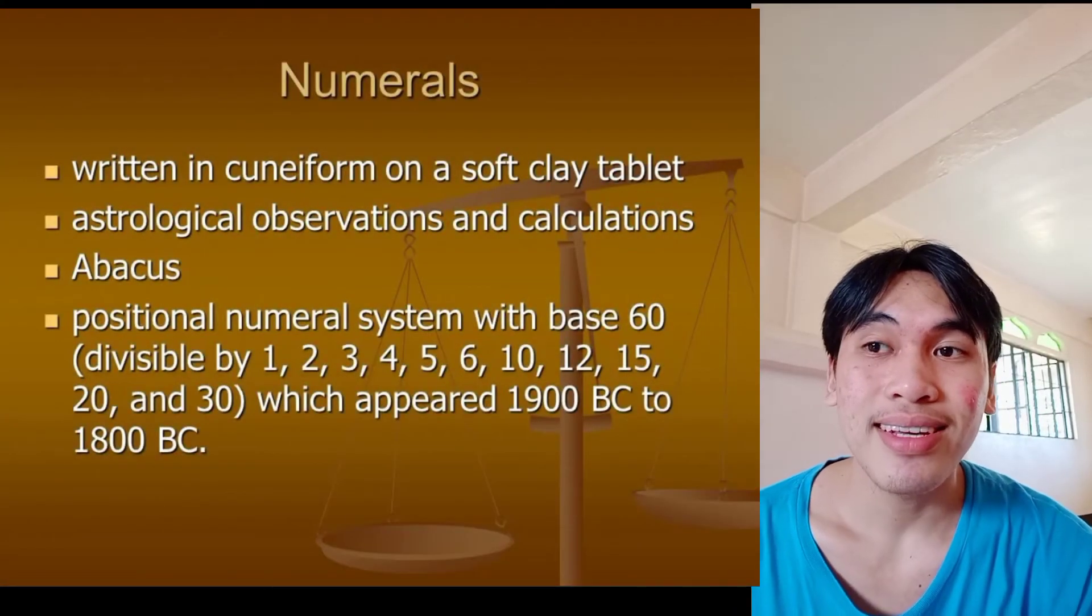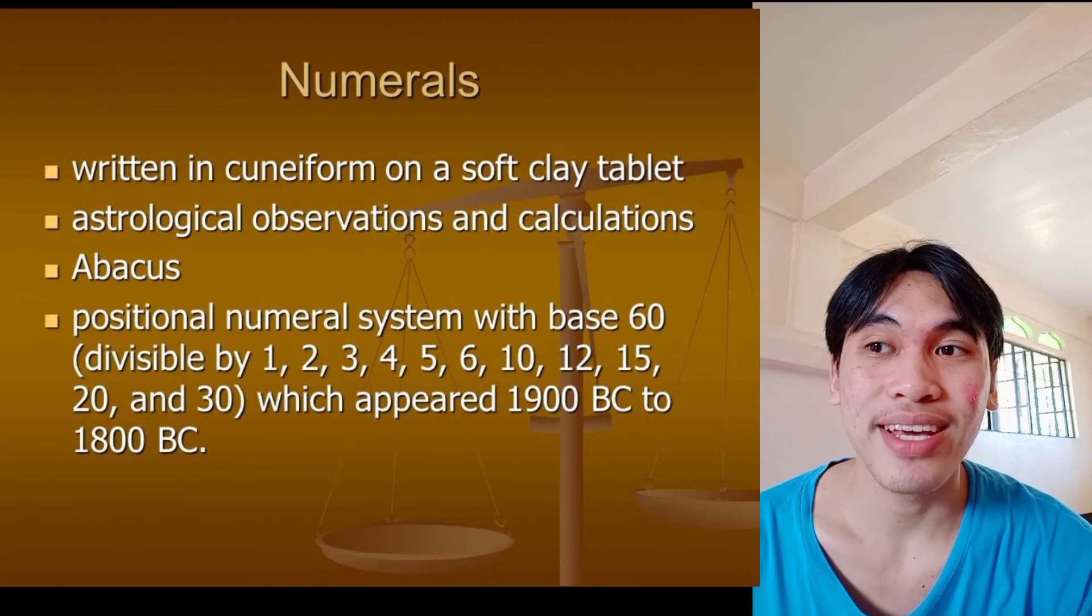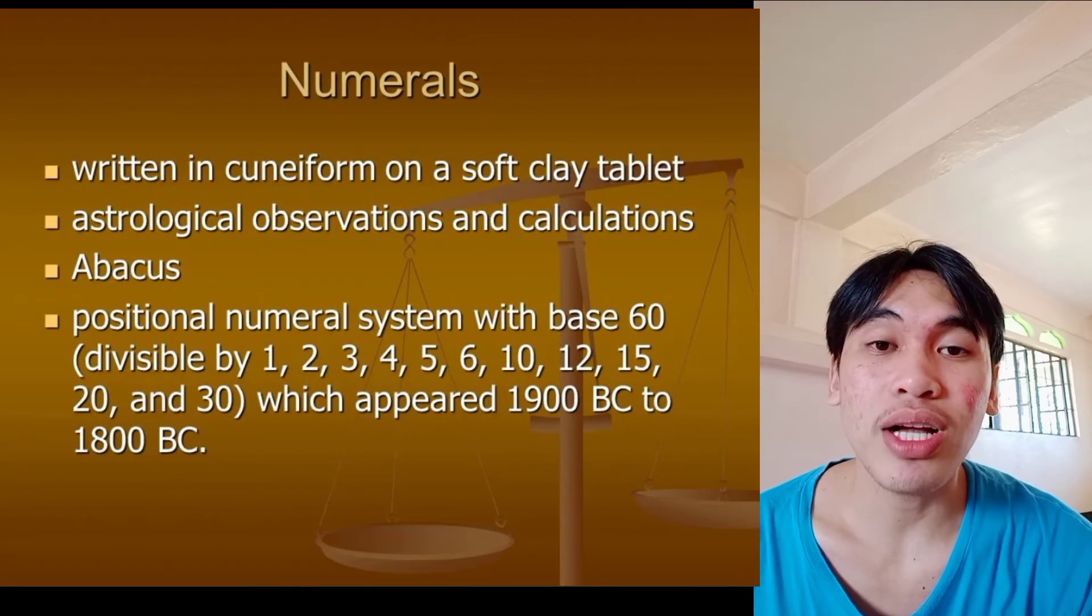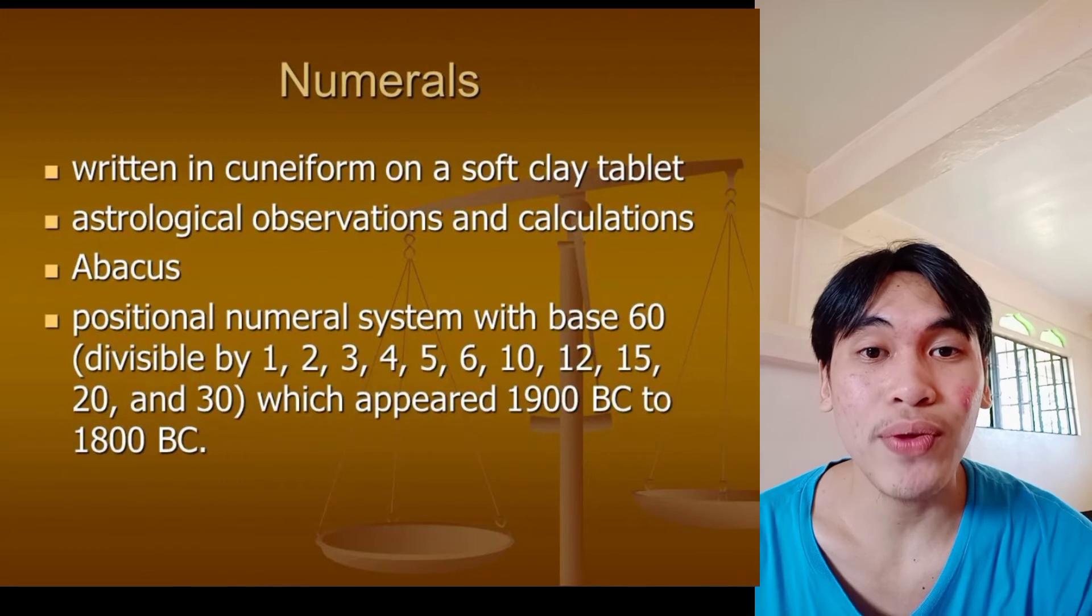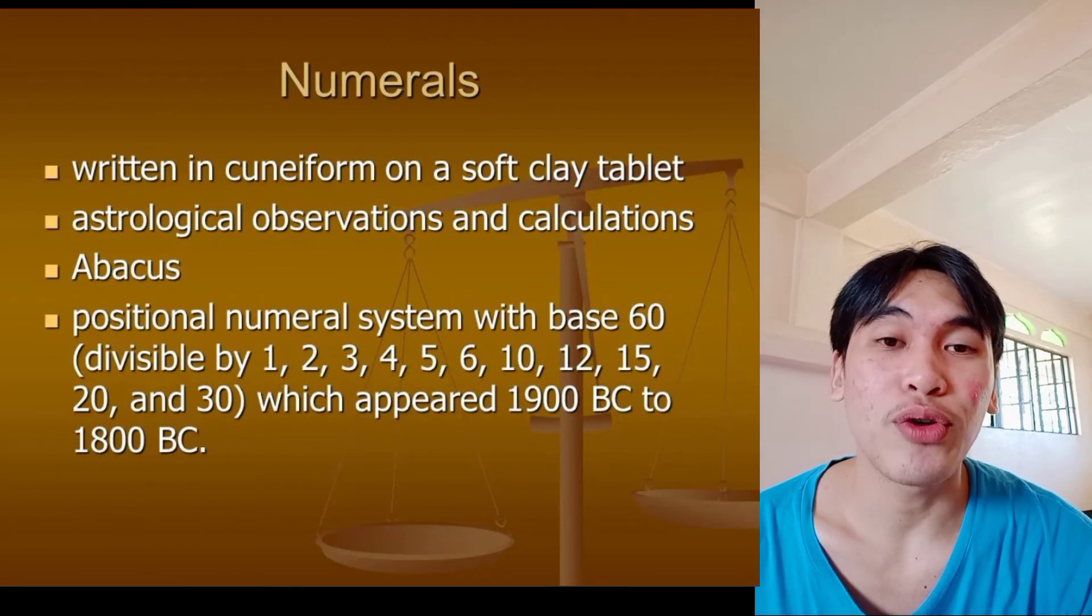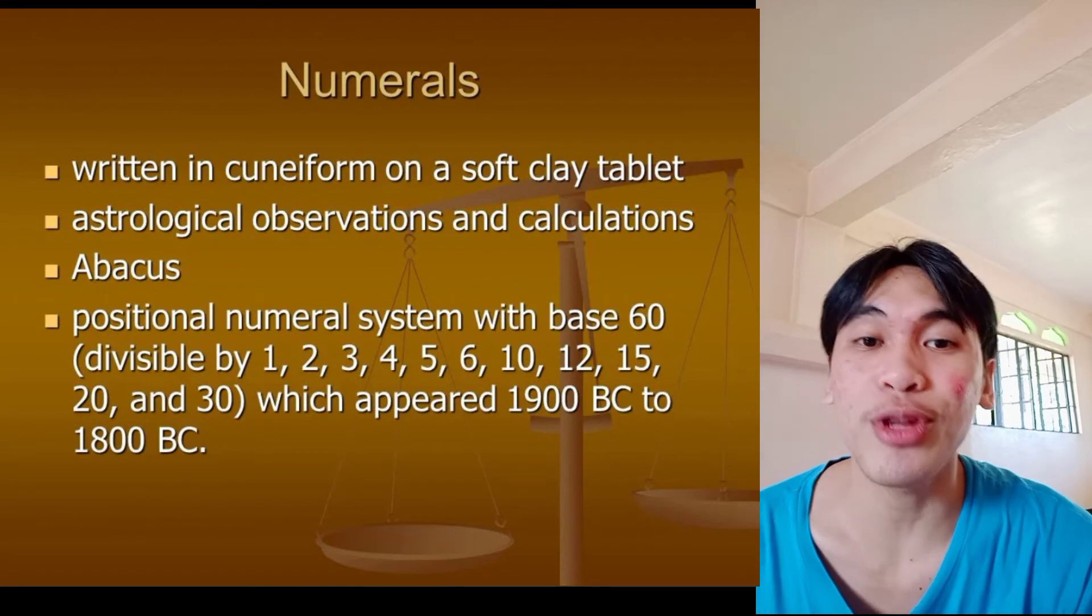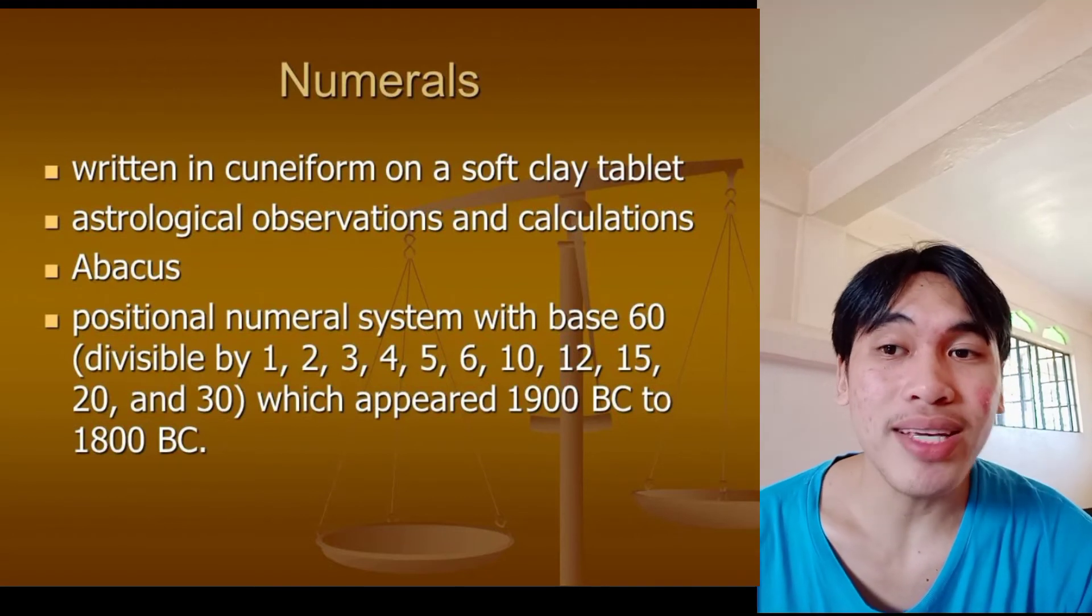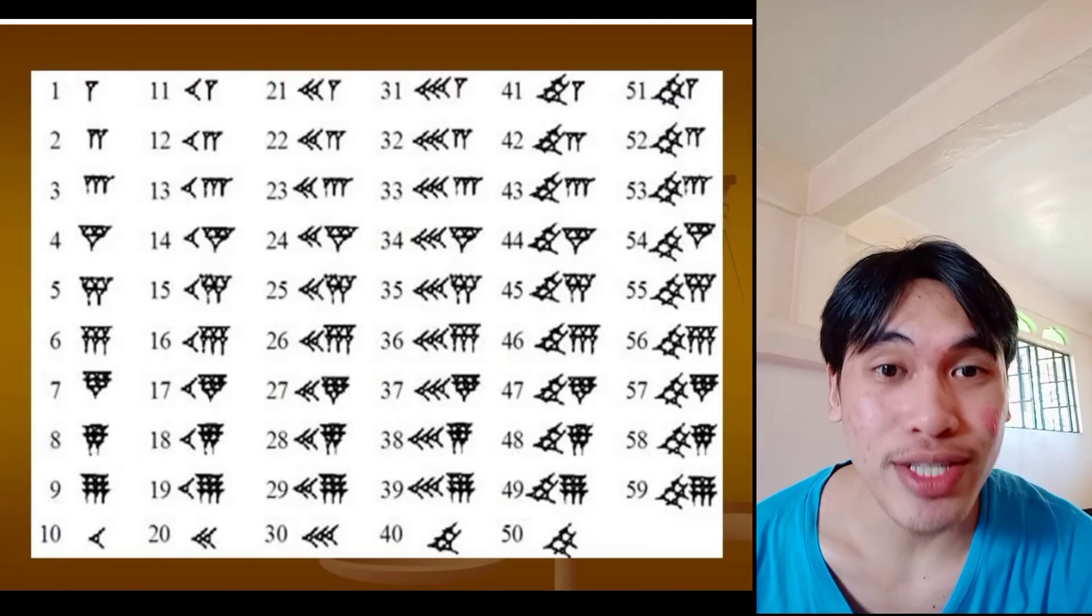The numerals is written in cuneiform on soft clay tablet. Astrological observations and calculations, it's abacus. Positional numerical systems with base 60. It's divisible by 1, 2, 3, 4, 5, 6, 10, 12, 15, 20, and 30, which appeared 1900 BC to 1800 BC. This is their numerical system.